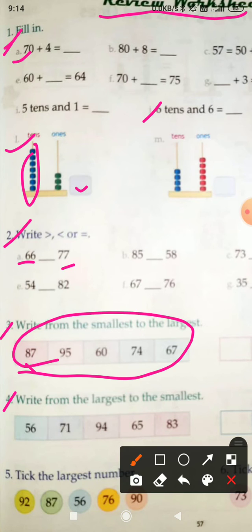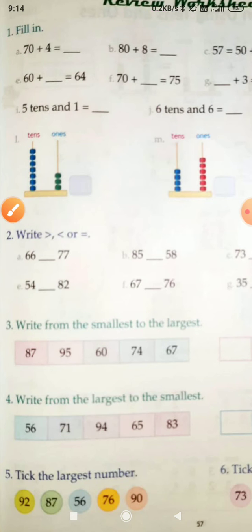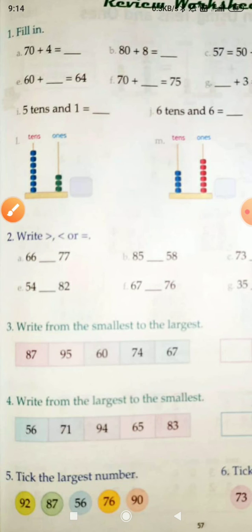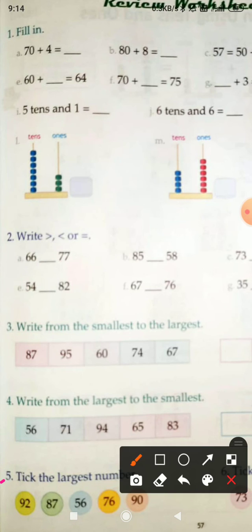Question number 4: write from the largest to the smallest. Here you have to arrange it largest to the smallest. First of all, write the largest number, then move to the smallest. Question number 5: take the largest number — here you have to take the largest number.